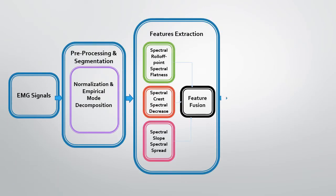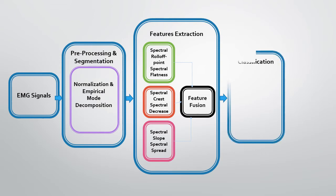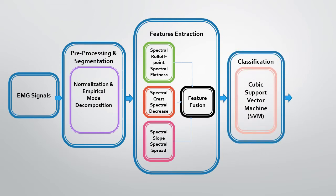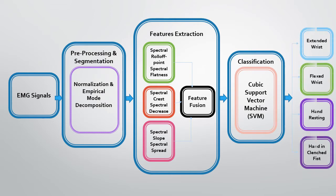As the flow diagram clearly indicates, we have taken the EMG signals and then applied signal processing based techniques such as preprocessing, normalization, and segmentation; empirical mode decomposition is also applied. The cubic support vector machine classifier is trained on four different EMG based hand gestures named as wrist flexion, wrist extension, resting hand, and clenched fist.